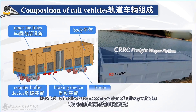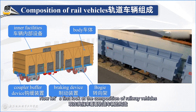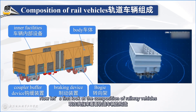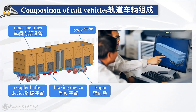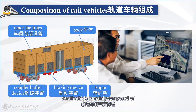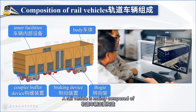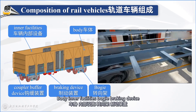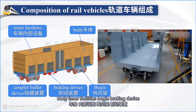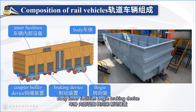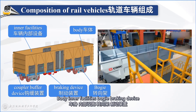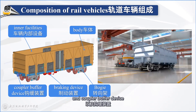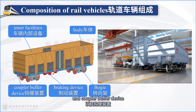Now let's first look at the composition of railway vehicles. A rail vehicle is mainly composed of body, inner facilities, bogie, braking device, and coupler buffer device.